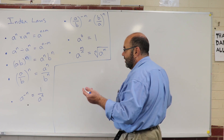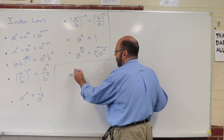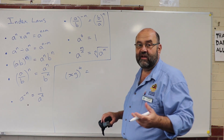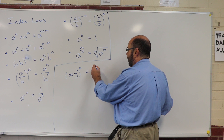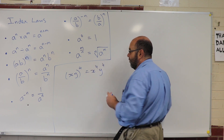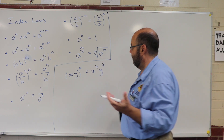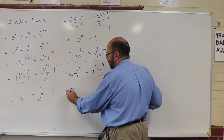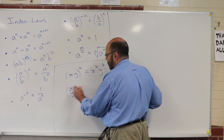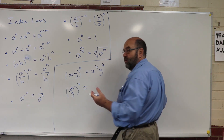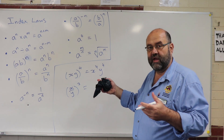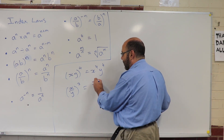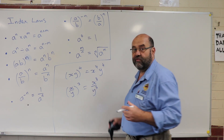So if I've got (xy) to the power of 4, both of those get a power of 4 — x gets a power of 4 and y gets a power of 4. If it was a division, same story. If I've got (x over y) to the power of 3, it's a division, so the power gets distributed to both the numerator and the denominator: x gets a power of 3, and y gets a power of 3.